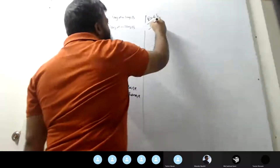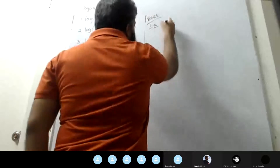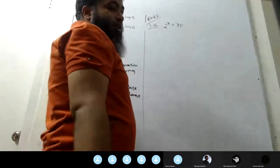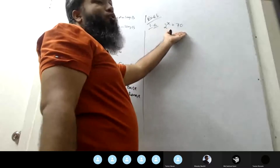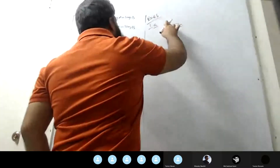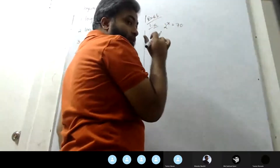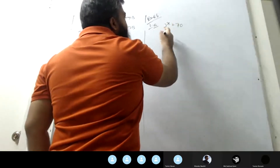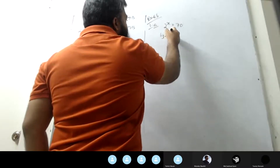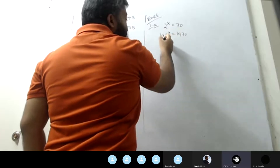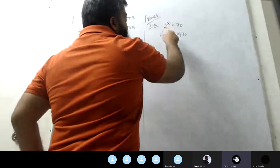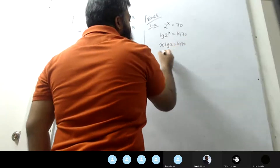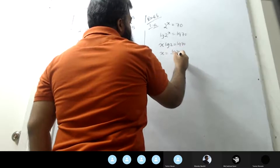One A: two to the power x equals 70. Two to the power x equals log 70. That means x equals log 70 by log 2.